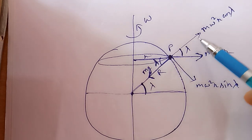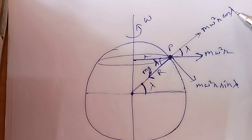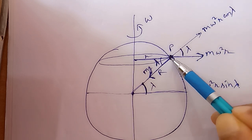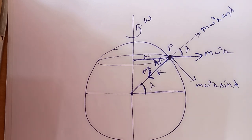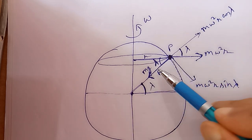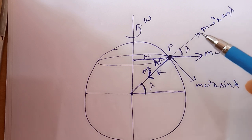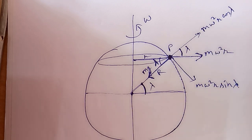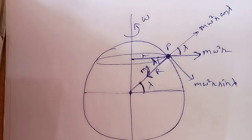The component mω²r·cosλ is directly opposite to the weight mg of the object. It opposes the weight, so it will reduce the weight and the apparent weight will be less. Now let's find out what small r is.